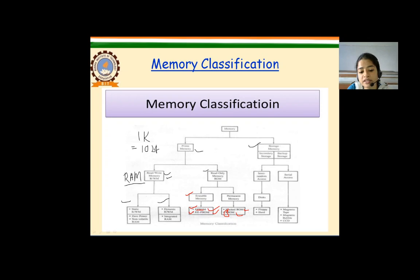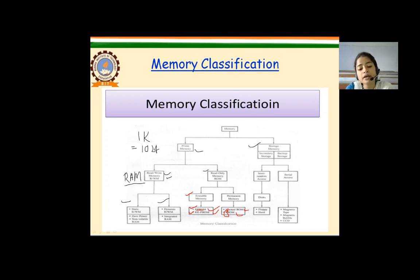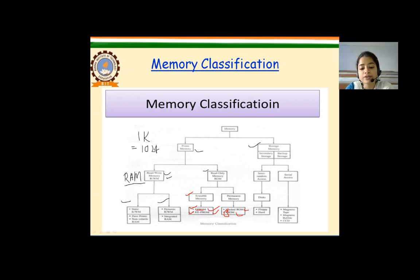EEPROM — electrically erasable programmable read-only memory — is also erasable and can be erased and reprogrammed several times with the help of electrical signals. EEPROM can be erased at the register level, and the erasing time is in milliseconds, which is far less than EPROM. However, because of this, EEPROM is more expensive than PROM.